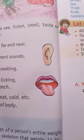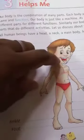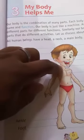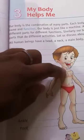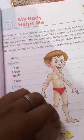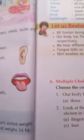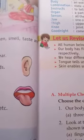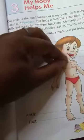Our head rests on our neck. Our neck is the part of our body which supports our head to stand erect. The neck joins the head and the main body. Our main body is joined with the head by the neck. Our neck is the bridge between our head and our body.